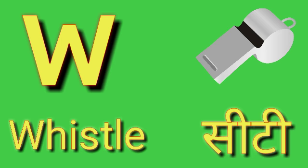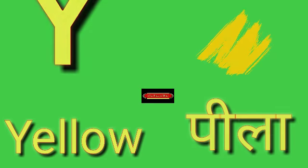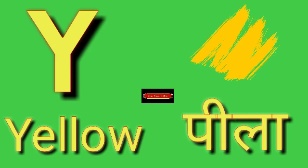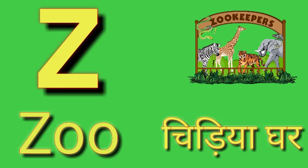W for Visual, Visual means City. X for X-Ray, X-Ray means X-Ray. Y for Yellow, Yellow means Peela. Z for Zoo, Zoo means Chidiyaghar.